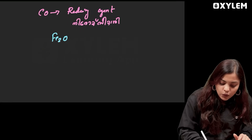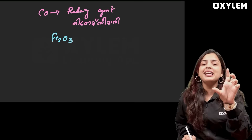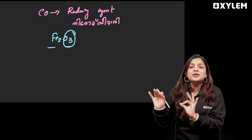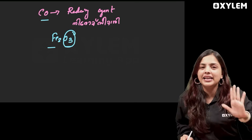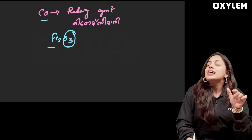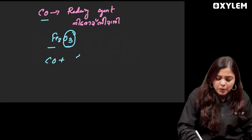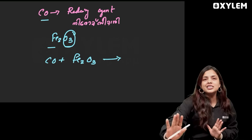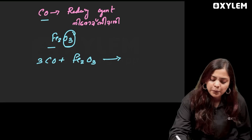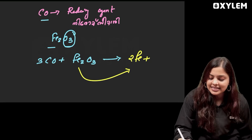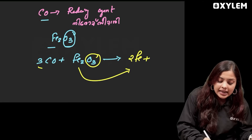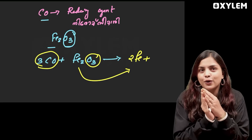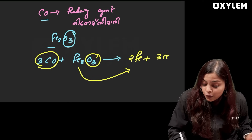Carbon monoxide reacts with Fe2O3. Since Fe2O3 contains oxygen, the carbon monoxide removes that oxygen. The iron is released and the carbon monoxide is oxidised, forming three molecules of carbon dioxide (CO2).